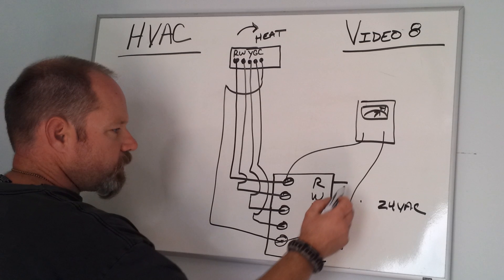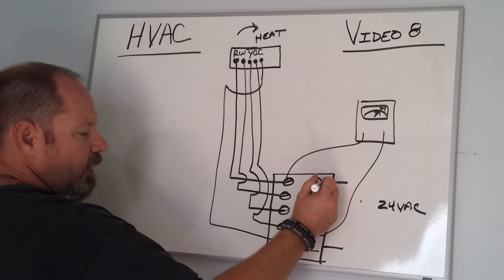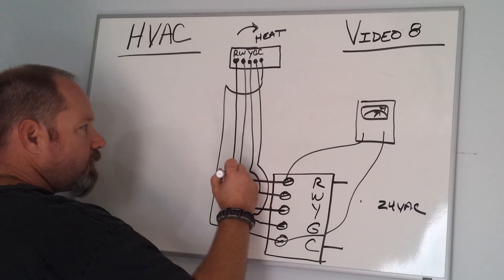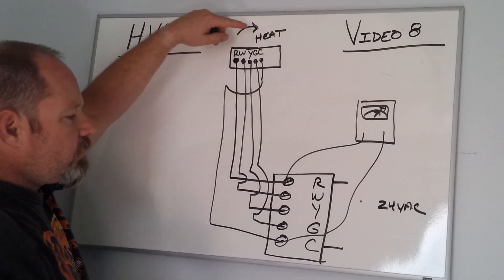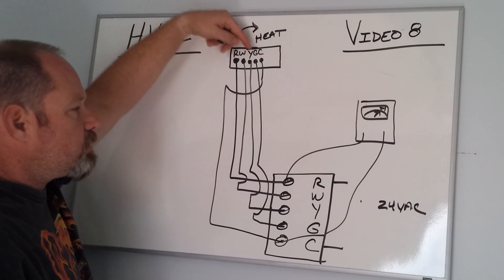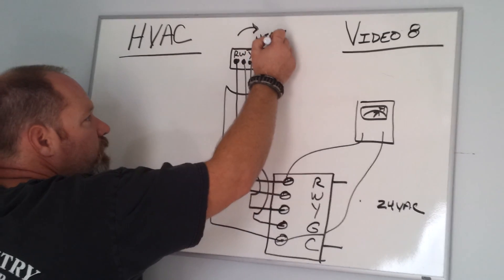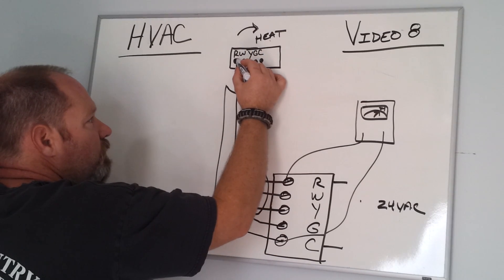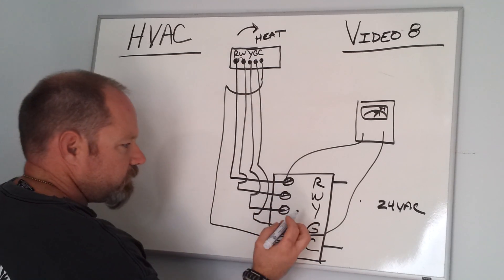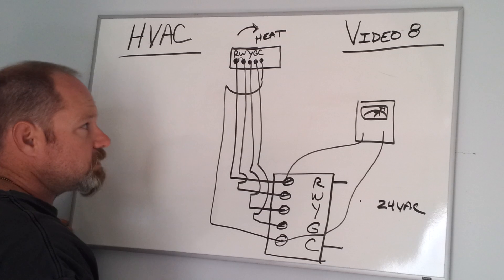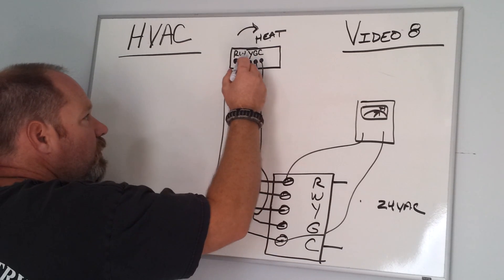The way this works is the furnace is going to put 24 volts out on R up to the thermostat. Then the thermostat is going to decide or tell the furnace what to do depending on which signal it sends down which wire. When you call for heat, it's going to send it down the W. W is the call for heat, and that initiates your heat cycle.